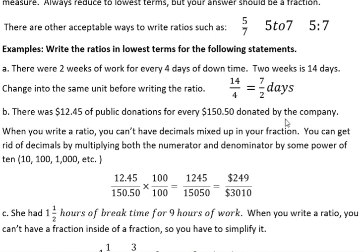B, there was $12.45 of public donations for every $150.50 donated by the company. Those units are the same. It's money, dollars. When you write a ratio, though, you can't have decimals mixed up in your fraction. And so you get rid of decimals by multiplying by some powers of 10. Powers of 10, you remember, are 10, 100, 1000, etc.